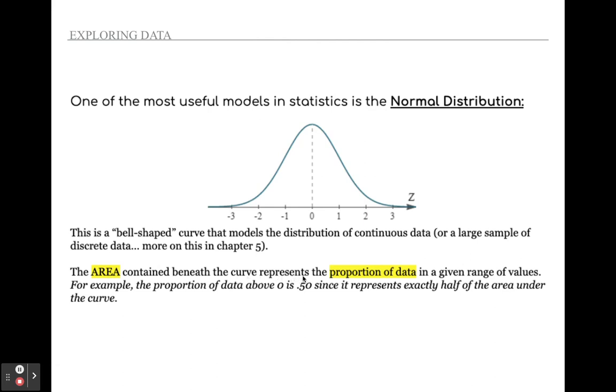The area contained beneath the normal distribution represents the proportion of data or the probability of finding data in a given range of values. For example, the proportion of data above zero, so if this is my distribution, zero is right in the middle. If I shaded this curve, if I started shading this half of the curve, that would represent 50%, since it represents exactly half of the area under the curve. So if I start shading areas under this curve, that represents the proportion of data within a given range.